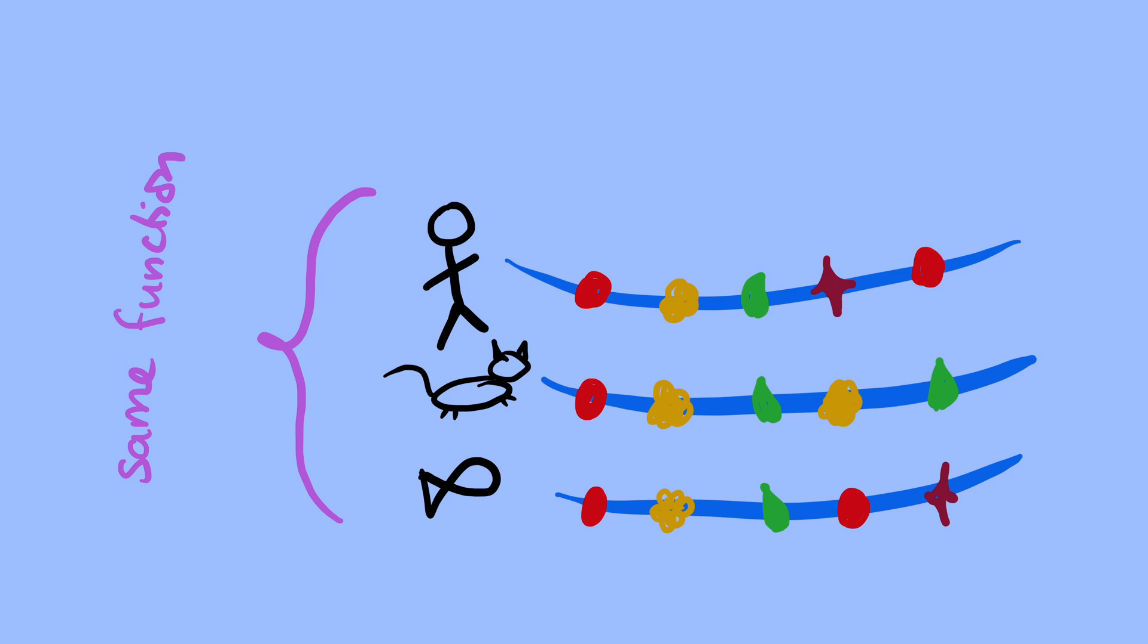Now, what that tells us is that there are some parts of this protein that are important to its function and some parts that matter a little bit less. So for example, if you find that this region is always conserved, all of the different proteins have the exact same thing for that part, then that's probably an important part.